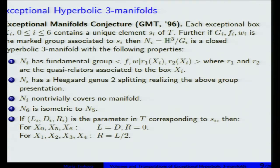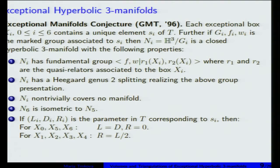Why exactly two quasi-relators? By definition, because we defined marked groups by two generators F and W. They discovered some loops and checked those loops for contradictions. Those loops correspond to geodesics, and they were shorter than the length of the shortest geodesic. Experimentally, in every box there was just one element that defined those relations.